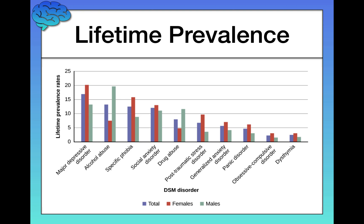Now let's do an exercise to get us thinking about what exactly counts as a psychological disorder. I'll read brief descriptions of three different patients and I want you to decide: is this person basically okay and maybe doesn't need psychotherapy? Is there a mild disturbance where psychotherapy should be considered? Is there a significant disturbance where psychotherapy is definitely required? Or is there a more severe disturbance that warrants immediate hospitalization — like if they're a danger to themselves or others?